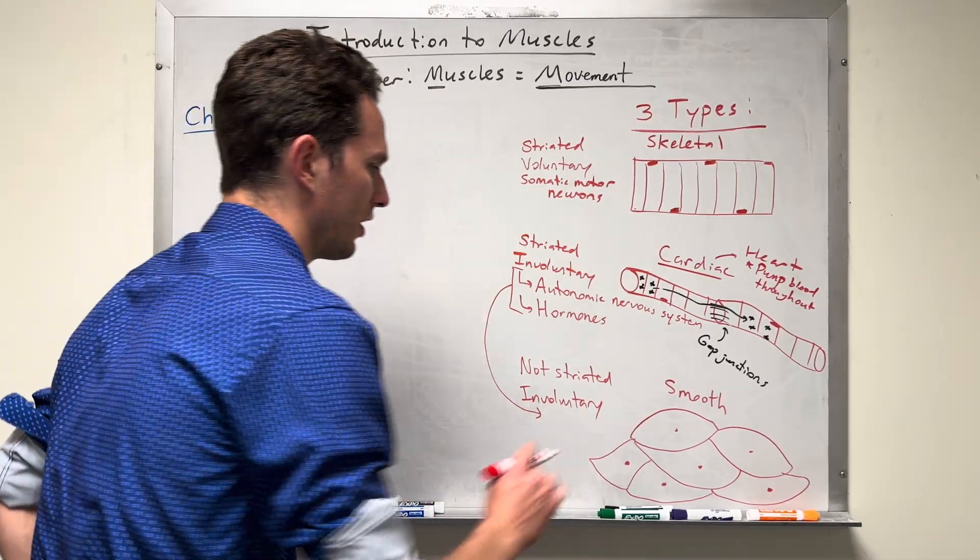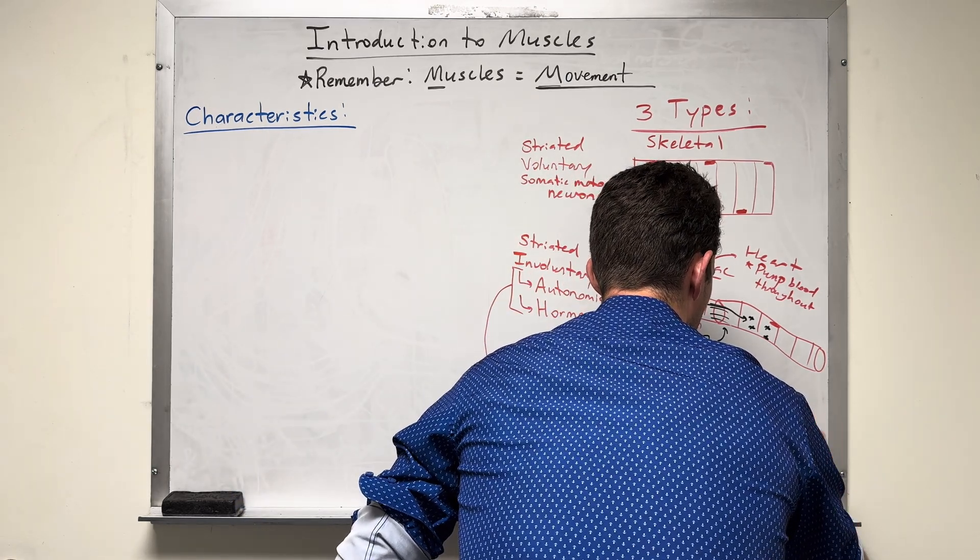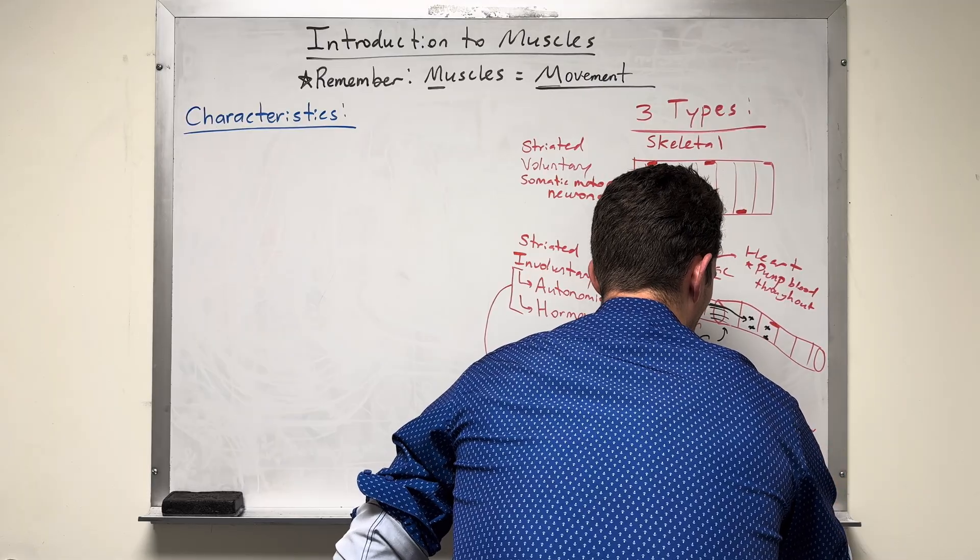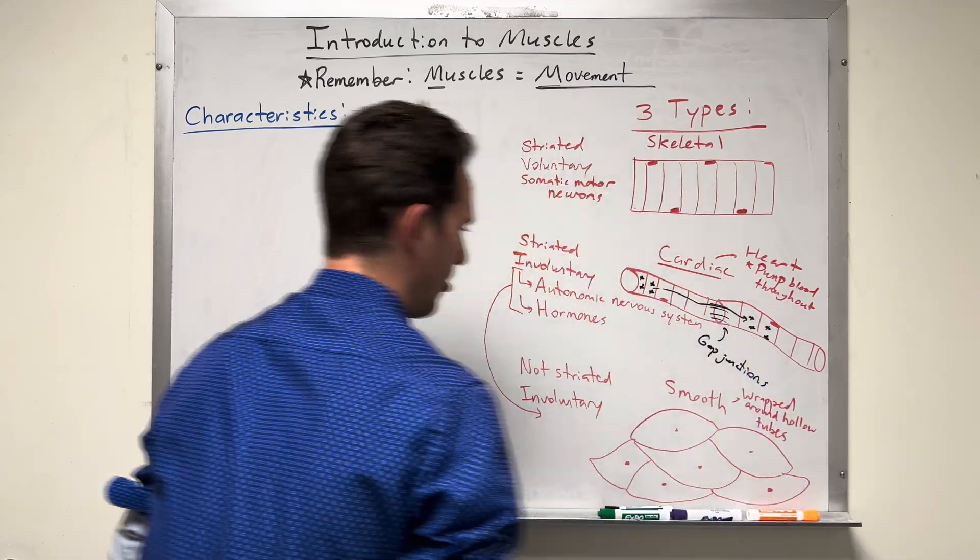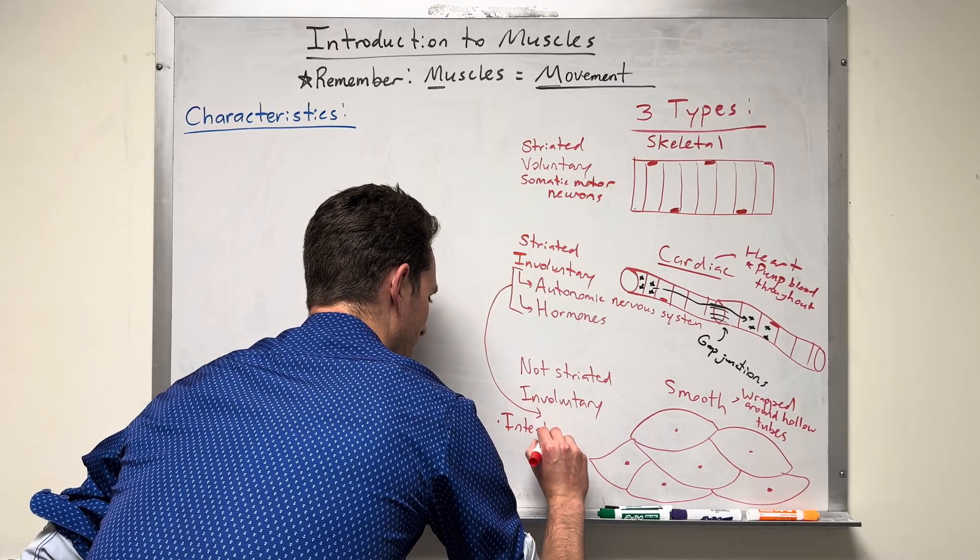I also want you to know that the smooth muscle is usually wrapped around hollow tubes. What hollow tubes do you have? Well, I'll write a little list here. Intestines, you've got smooth muscle lining your intestines.